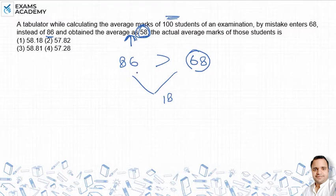लेकिन 18 से नहीं increase कर सकता है क्योंकि 18 तो वो different value है। उसको हमें in 100 students के बीच में बाटना पड़ेगा तो कैसे बाटेंगे - divide कर देंगे 100 से